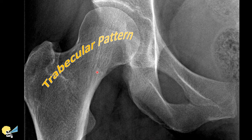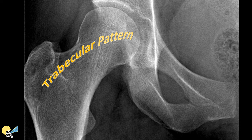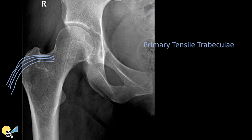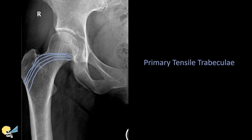The trabeculae provide structural support to bones while also playing a role in bone marrow storage and the transmission of forces throughout the skeleton. We have bone trabeculae everywhere, but let's use the proximal femur as an example, as it's been studied plenty.